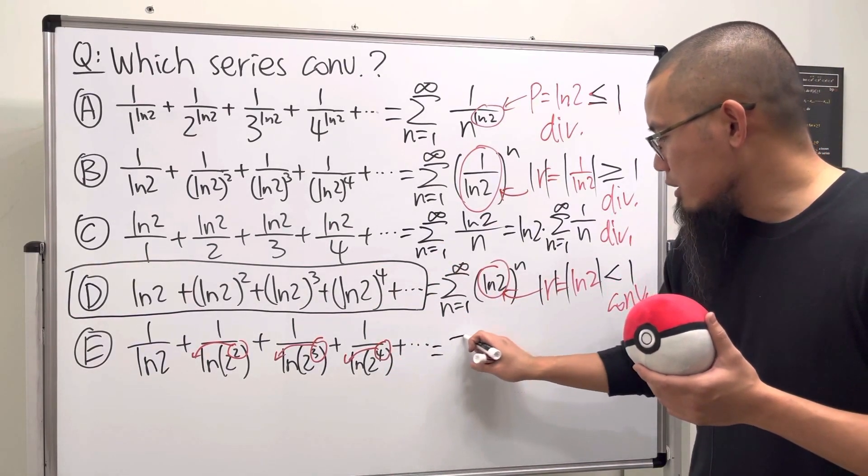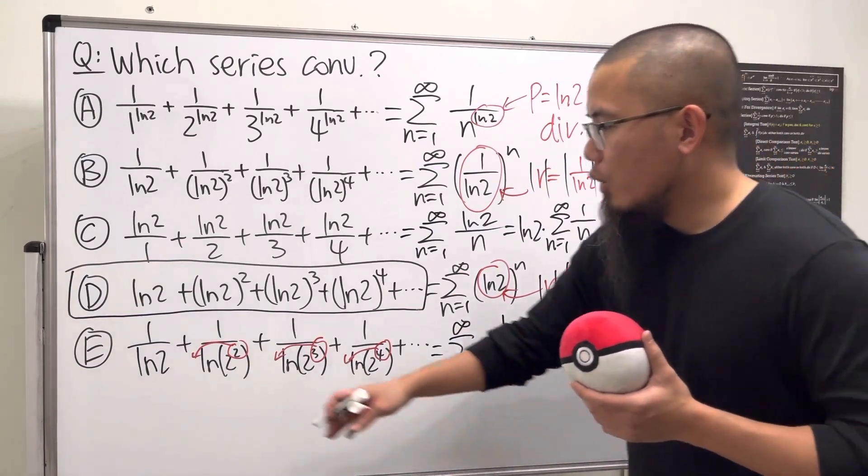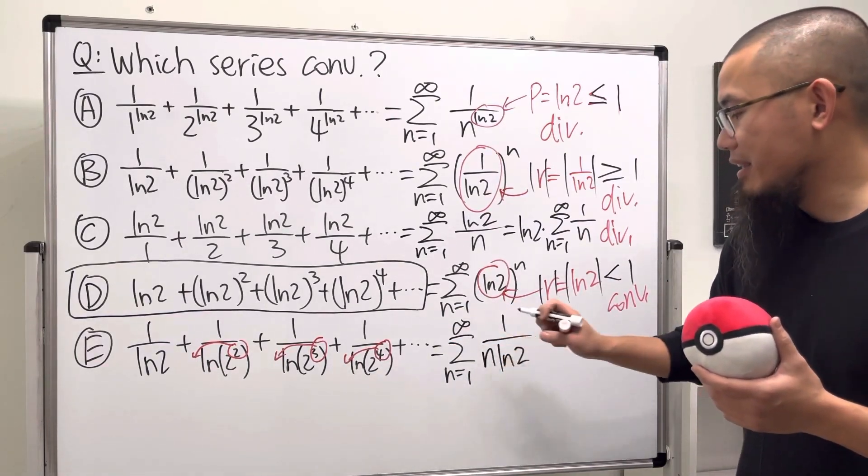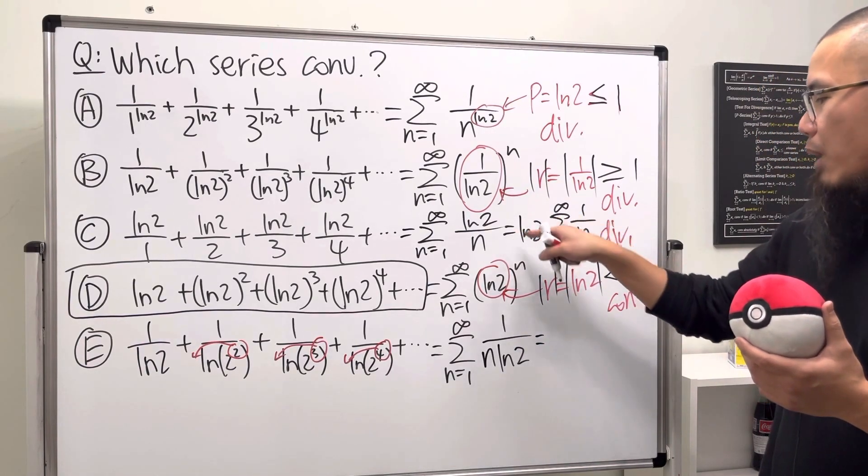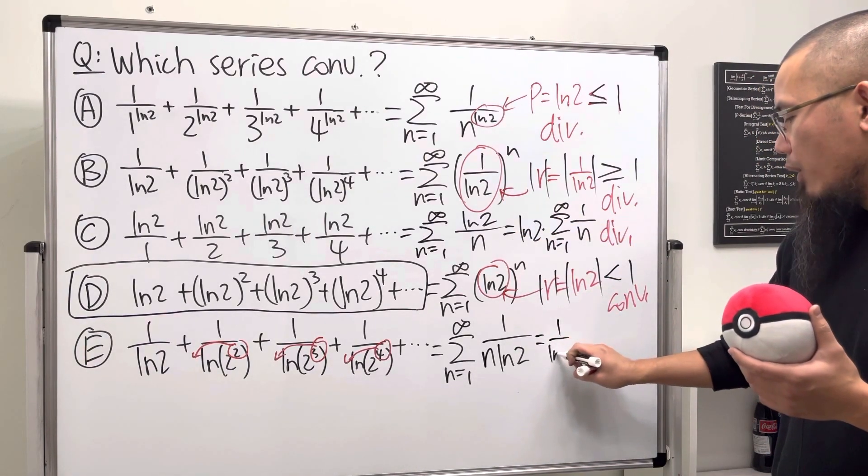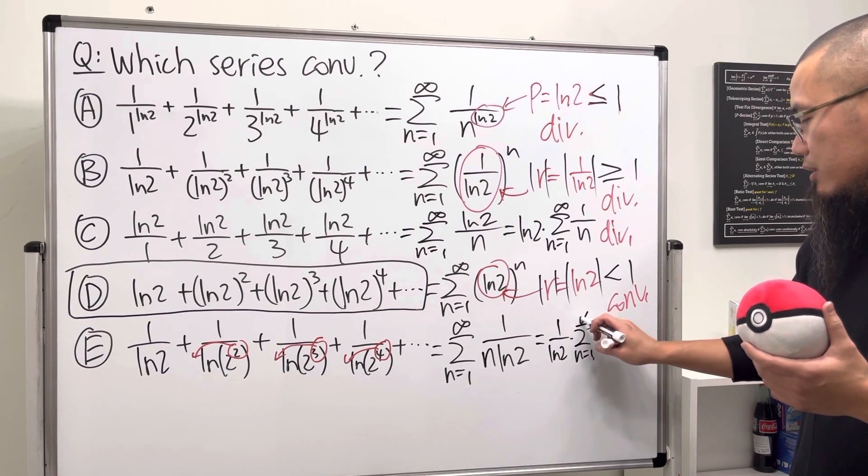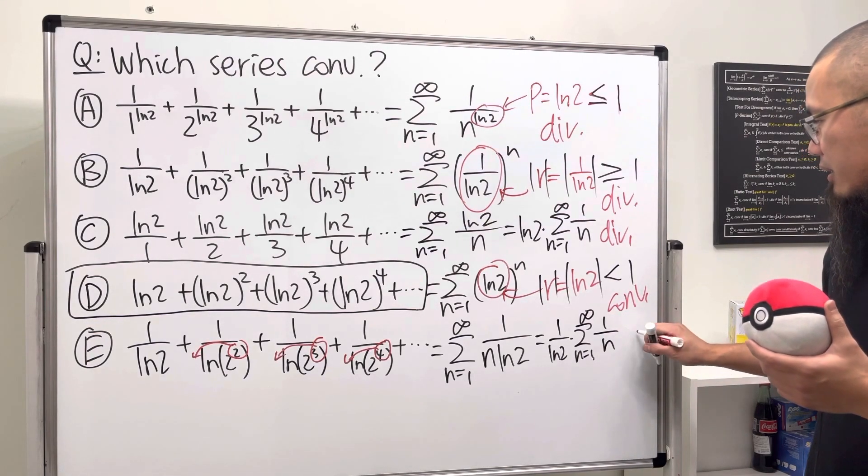We will get the series as n goes from one to infinity, 1 over—we do have ln2 on the bottom, but we will have the n right here. And in fact, this is just pretty similar to that one. We just have 1 over ln2 times the divergent harmonic series, right? So we have this, so this right here diverges as well.